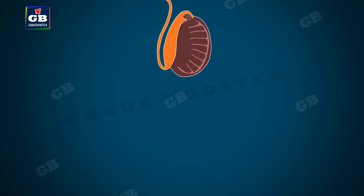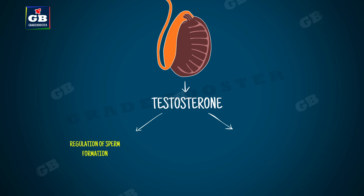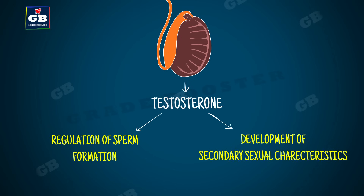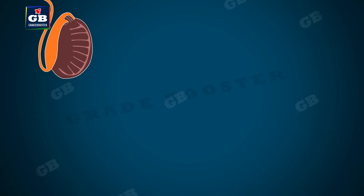The testes also produce a hormone called testosterone. It is a male reproductive hormone which regulates the formation of sperms and is also responsible for the development of secondary sexual characteristics during puberty.